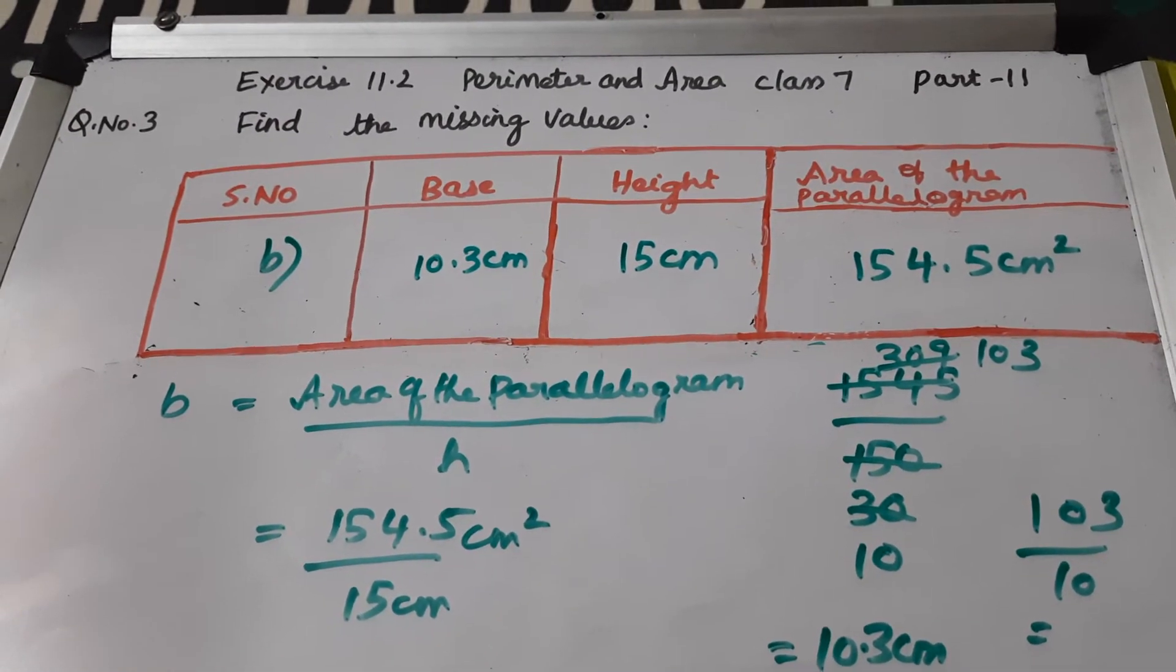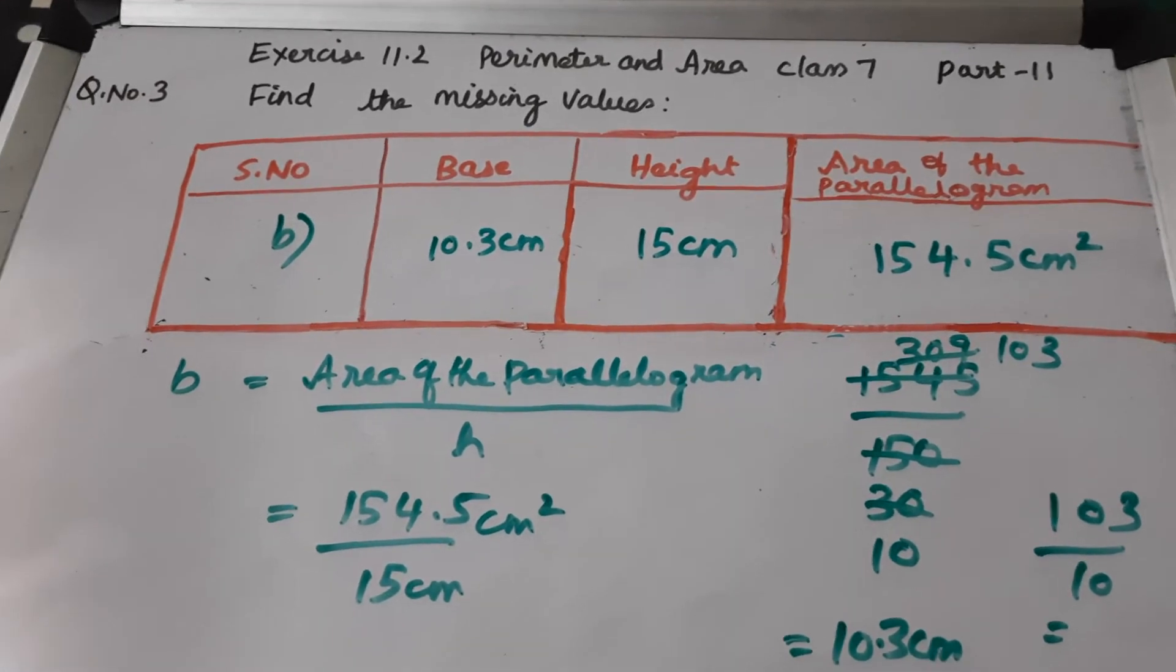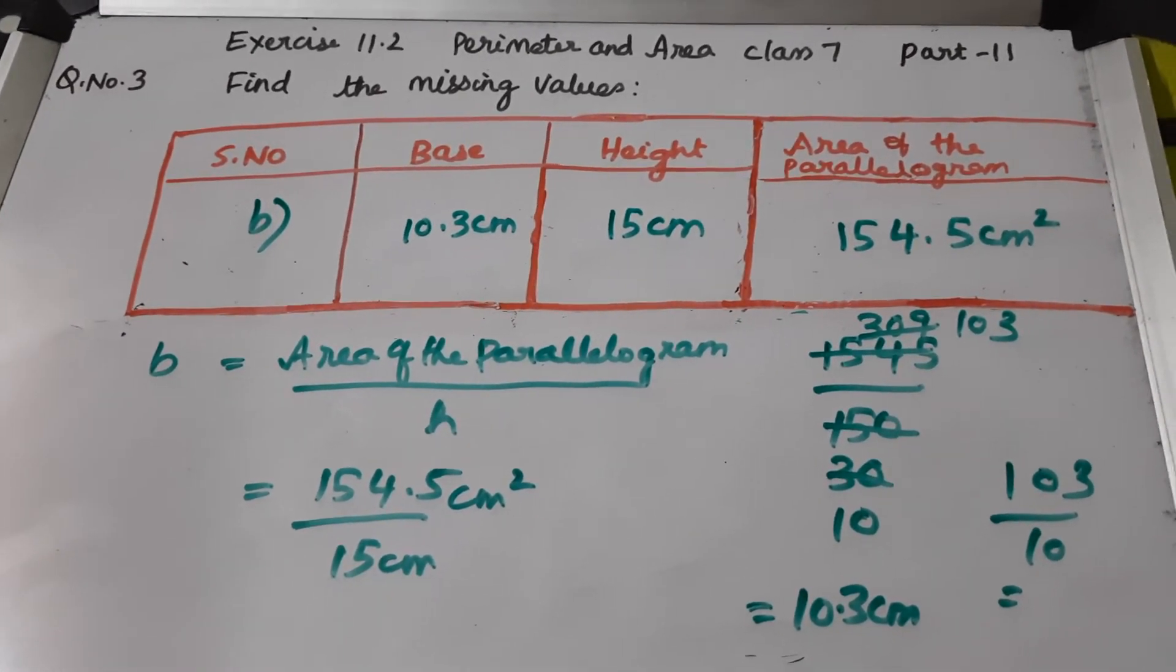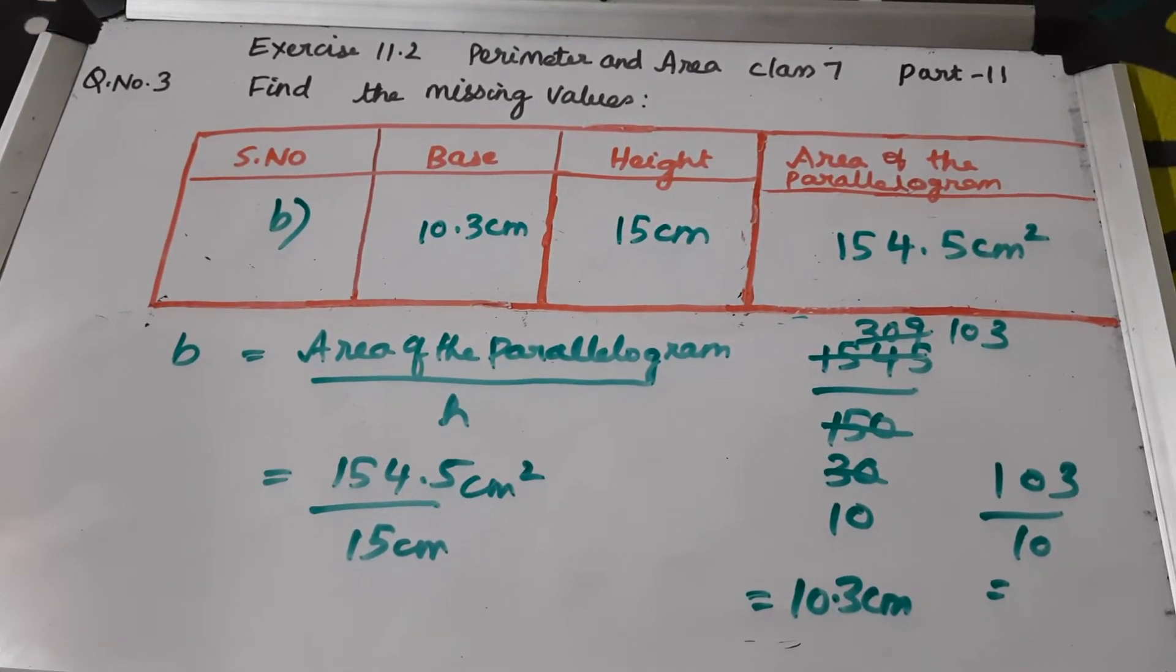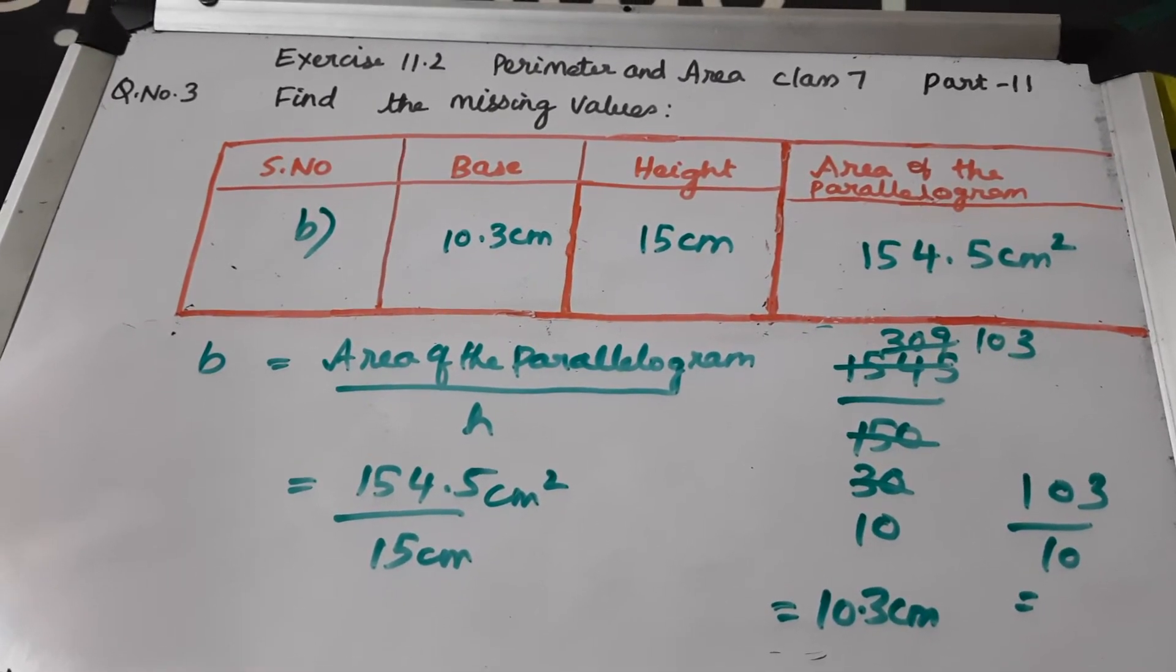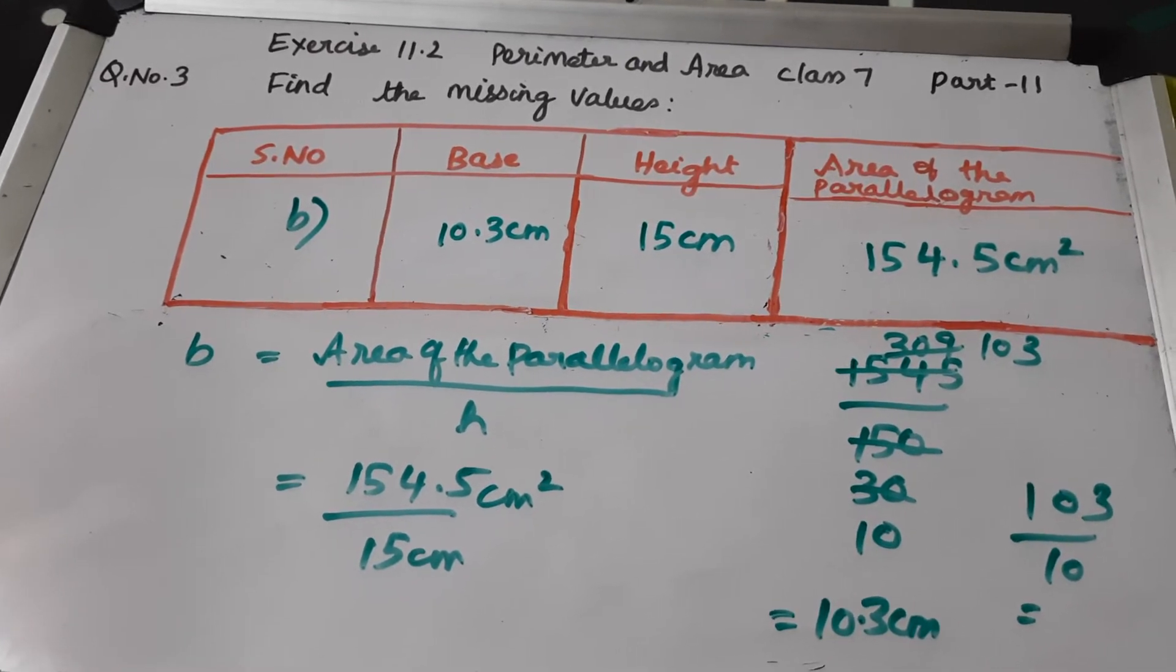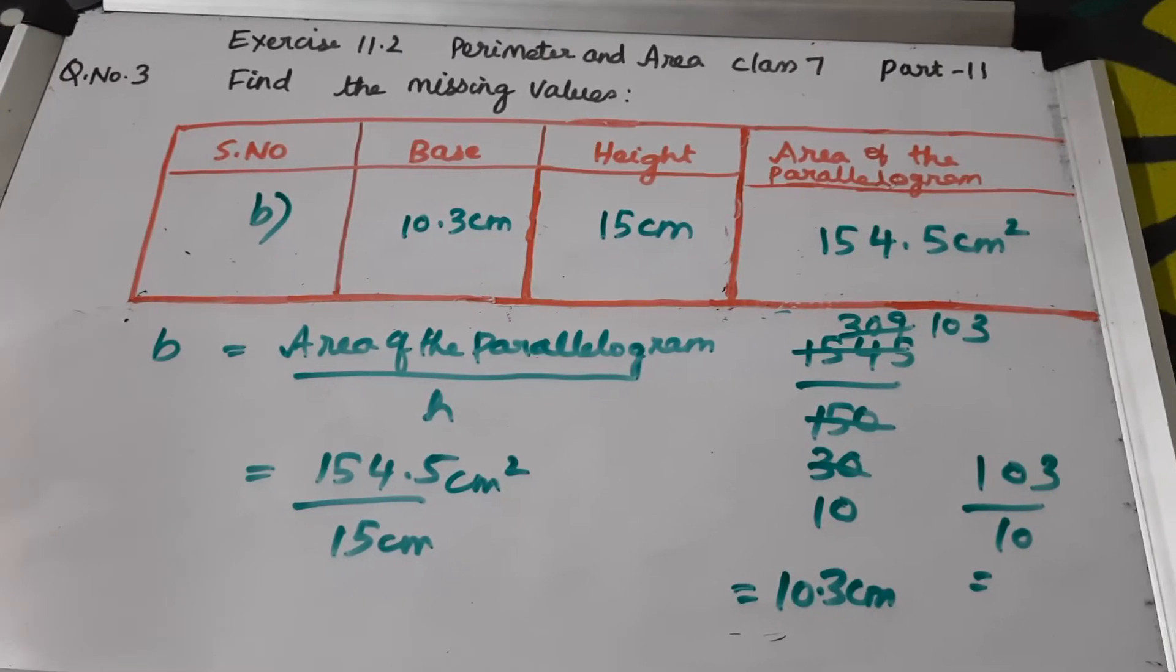When you simplify, things would be easier. Because you can do this by direct division, but there will be bigger numbers, so the scope for errors will be a little more. So better to simplify, and in case if you can't simplify further, then you can go for division. That would be a better method of solving such type of problems. Now we will go to the C bit.